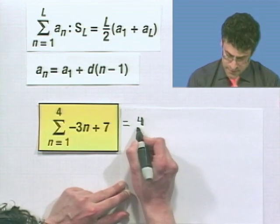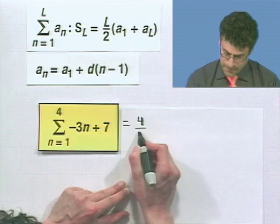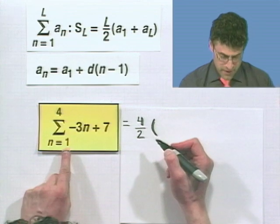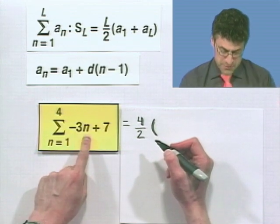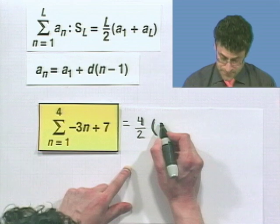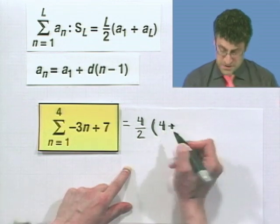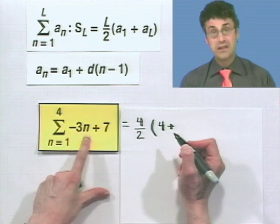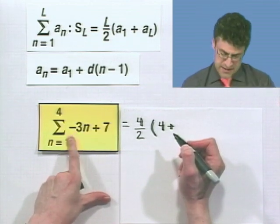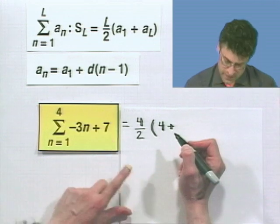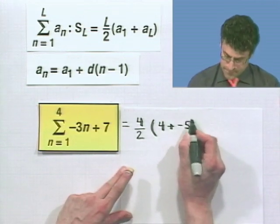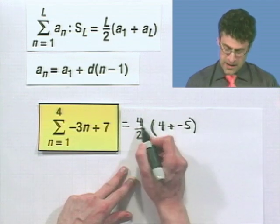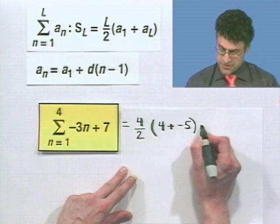So I'm going up using this formula here. Here I see that this sum is equal to... I've got 4 terms. I divide by 2. I multiply by the sum of the first term. That's when n equals 1. If n equals 1, I have negative 3 times 1. That's negative 3 plus 7. That's going to be 4. Plus the last term, which is when n equals 4. If I put in n equals 4 here, I see negative 3 times 4, which is negative 12. Negative 12 plus 7 is actually negative 5. So 4 plus negative 5 is negative 1. And 4 over 2 is just 2. So this equals negative 2.